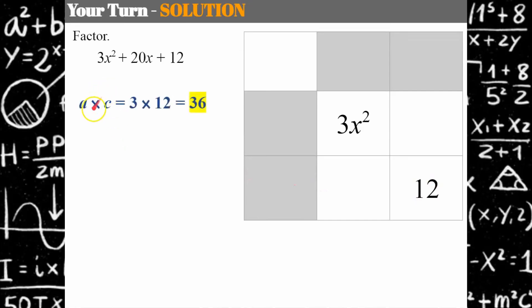Now I need to find the product of a times c. 3 times 12 is 36, and the factors of 36 that add up to 20 to get to 20x here are going to be 2 and 18. 2 multiplied by 18 is 36, 2 + 18 = 20. Now I know my diagonal like terms are going to be 2x and 18x, and I can start filling out my gray, which is my binomial pair.